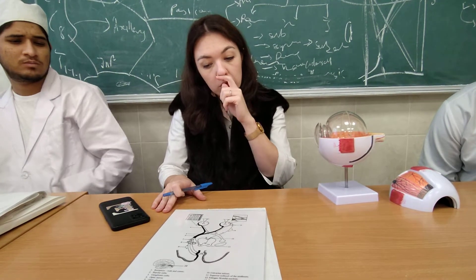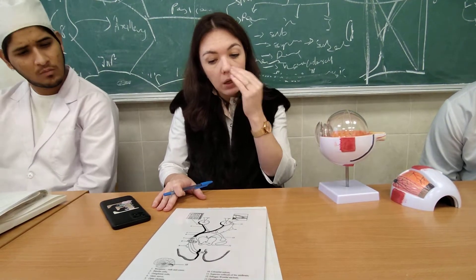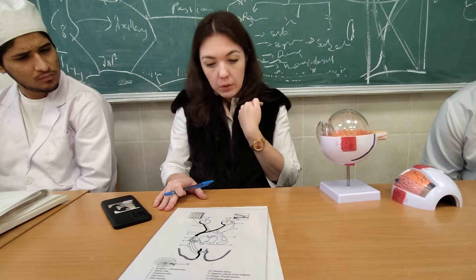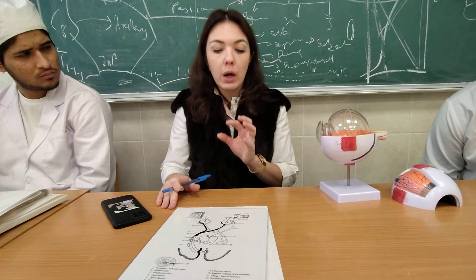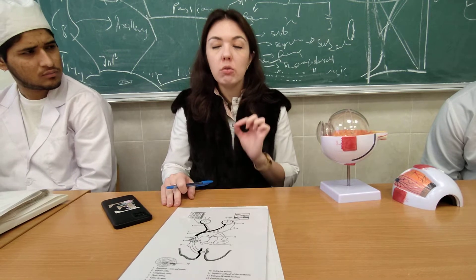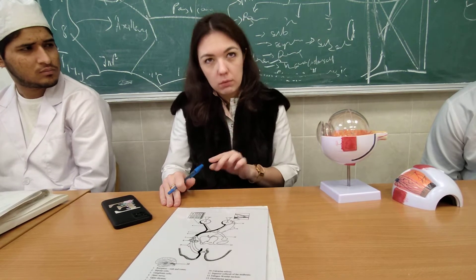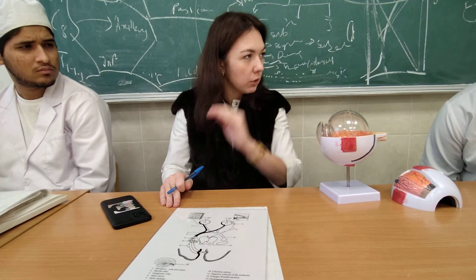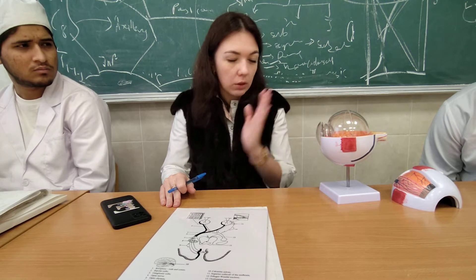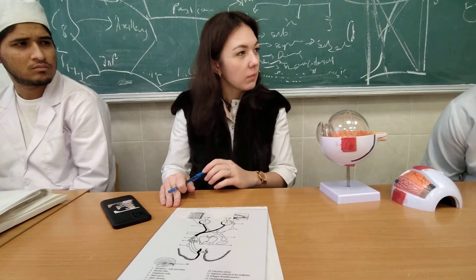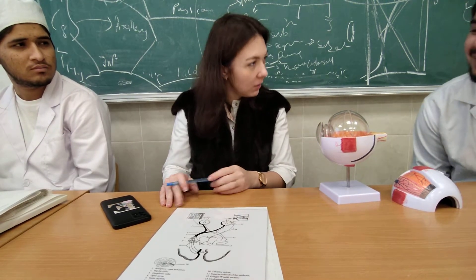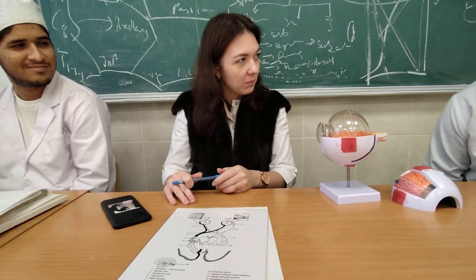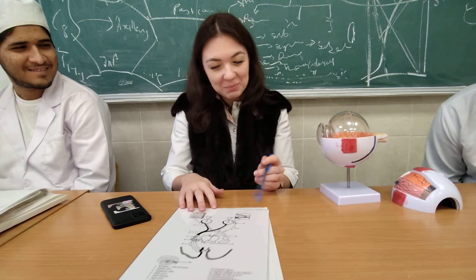If a person suffers from Dalton's disease, in Russia, for example, he has no right to get a driving license, because he will confuse the colors of traffic lights. In India, everything is possible.